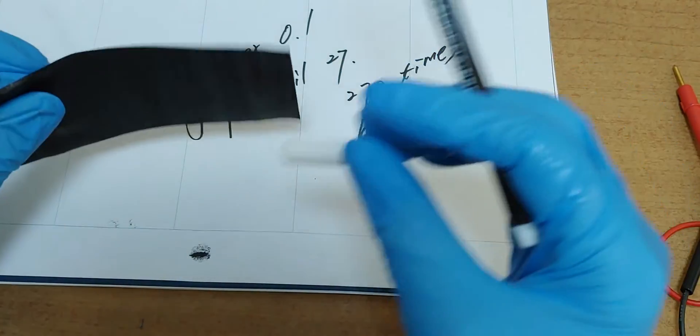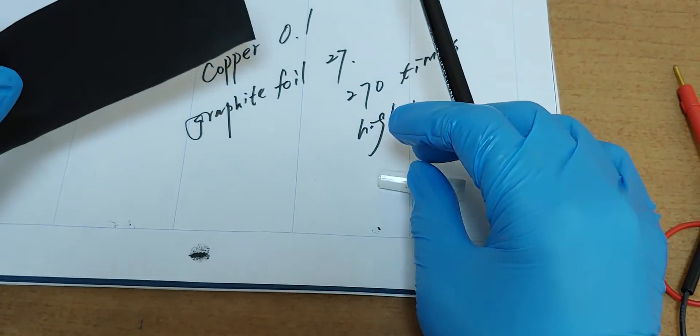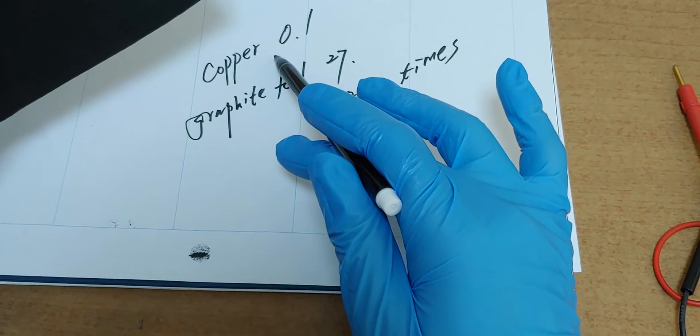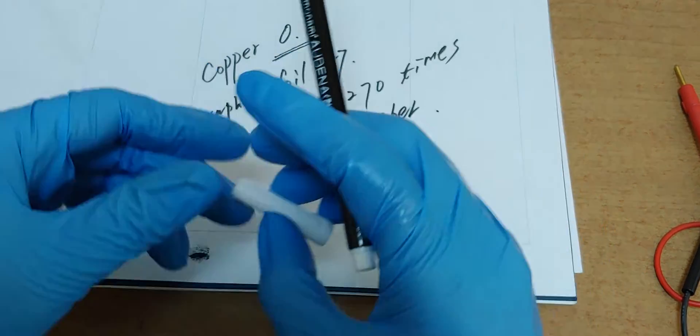If somebody develops graphene sheet and its ohm is like the copper, it will be great.